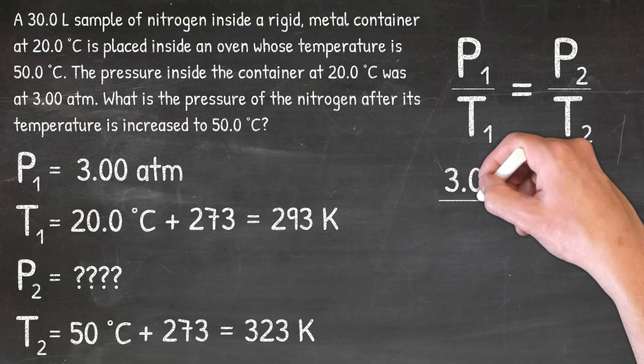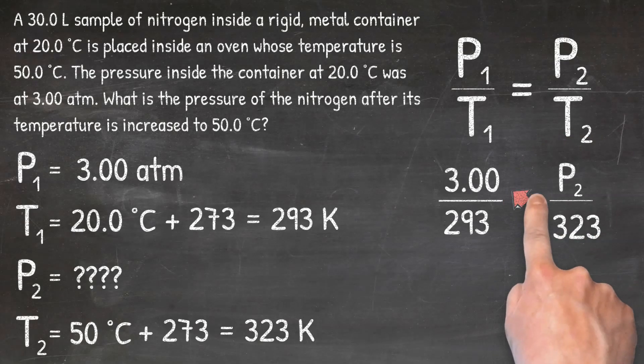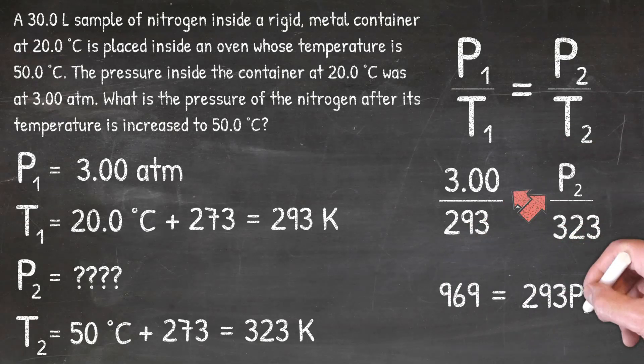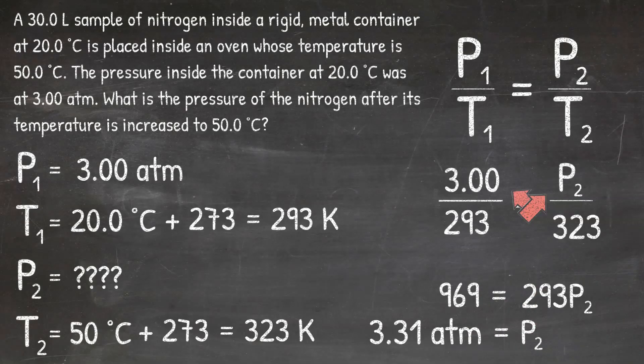Plugging into the formula: 3 ATM over 293 equals P2 over 323. Cross-multiplying gives 969 equals 293 times P2. Dividing by 293 gives P2 equals 3.31 ATM. This makes sense based on Gay-Lussac's Law: the temperature increased from 293 to 323 Kelvin, so we expect an increase in pressure, and we do see that — the pressure started at 3 ATM and increased to 3.31 ATM.